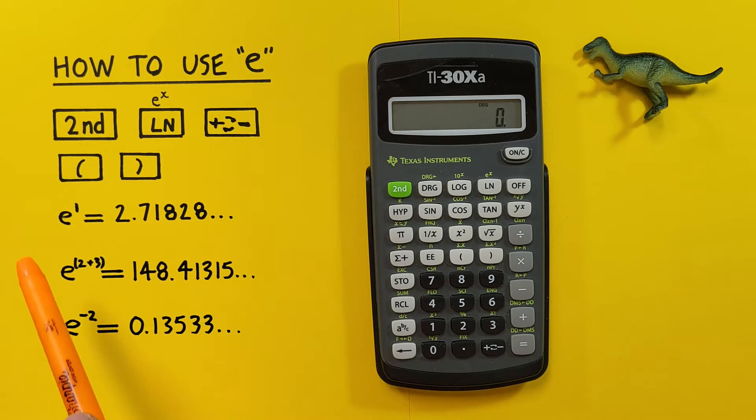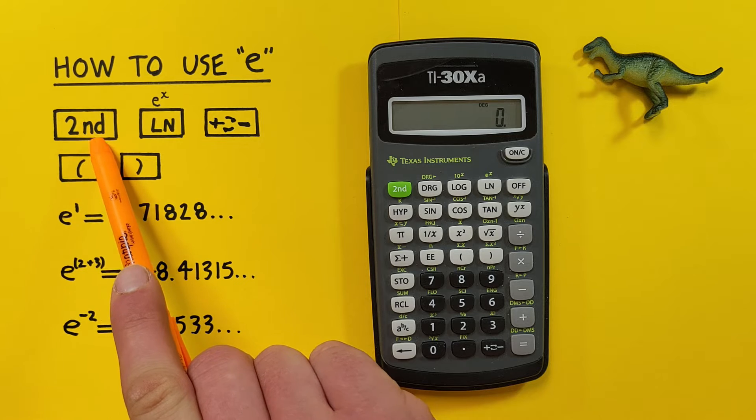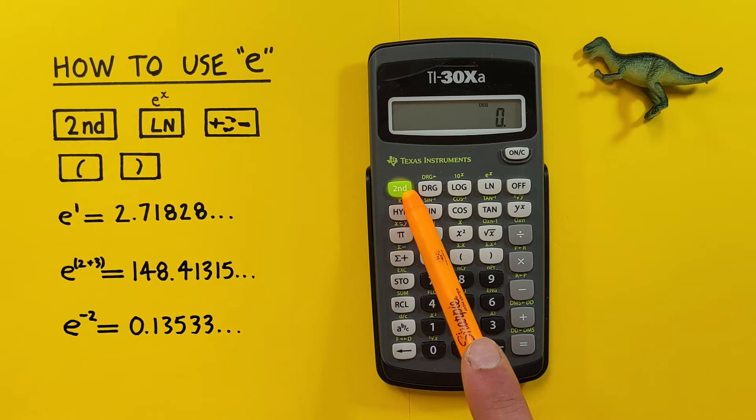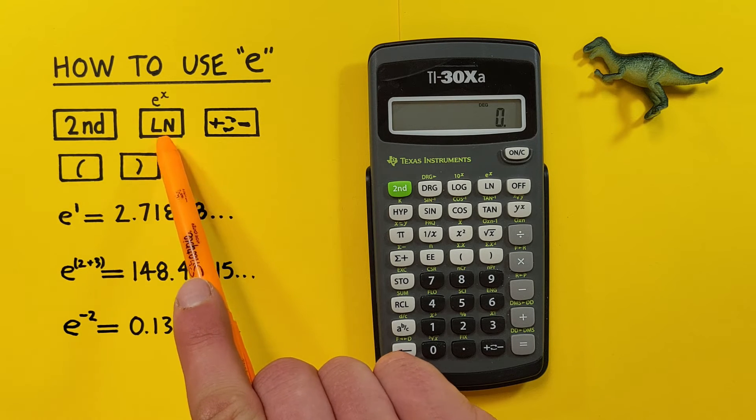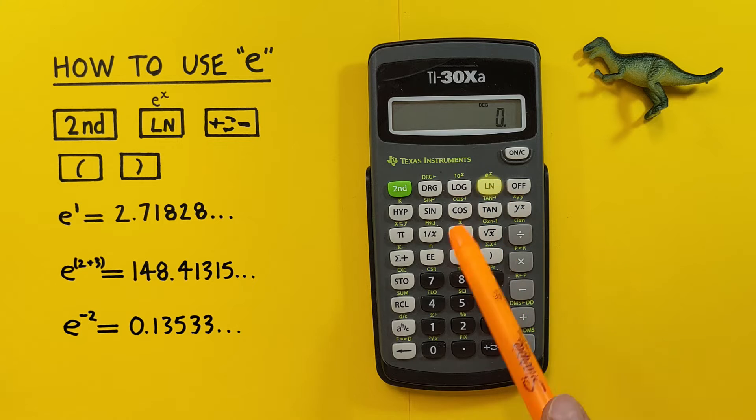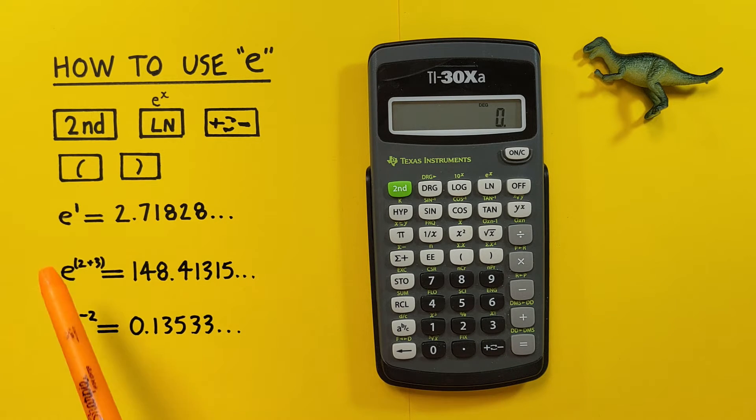To do this we use the second function key located here, the ln key with the second function of e located here, the positive negative key located here, and the bracket keys located here.